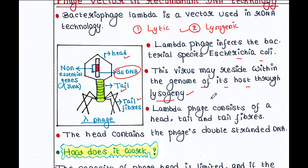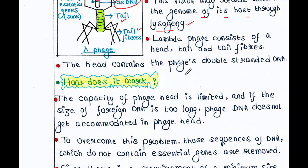When we use a phage vector in rDNA technology, it undergoes the lysogenic cycle. Now, the capacity of the phage head is limited, and if the size of the foreign DNA is too large, the phage DNA cannot be accommodated in the phage head. To overcome this problem, sequences of DNA that do not contain essential genes are removed.